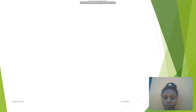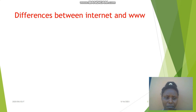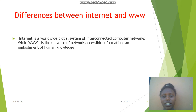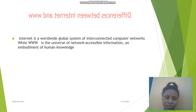Differences between internet and world wide web: Internet is a worldwide global system of interconnected computer networks, while the World Wide Web is the universe of network accessible information and embodiment of human knowledge.